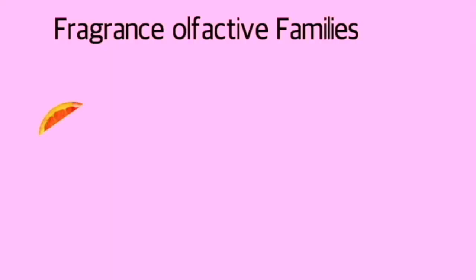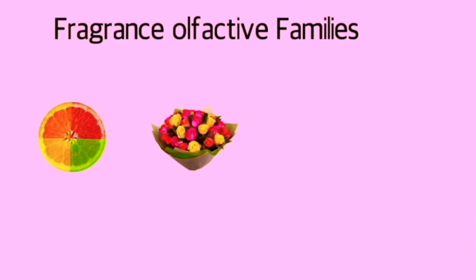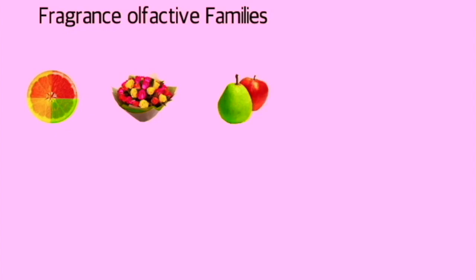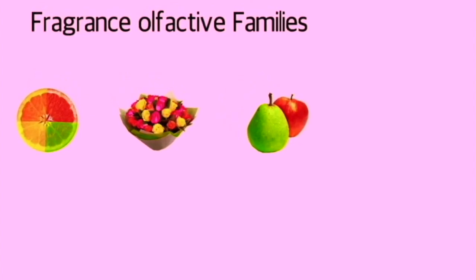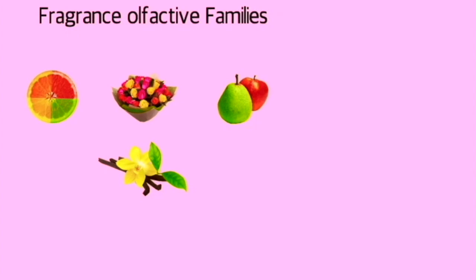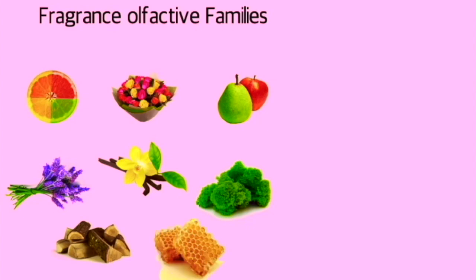In today's video we're going to take a look at fragrance olfactive families. Whenever a perfume is made it's housed in a particular group — so if it's a very floral smelling perfume it would go into the floral group. We're going to go over the main groups, not the subcategories, just the most common ones: citrus, floral, fruity, oriental, chypre, fougere, woody, and gourmand.